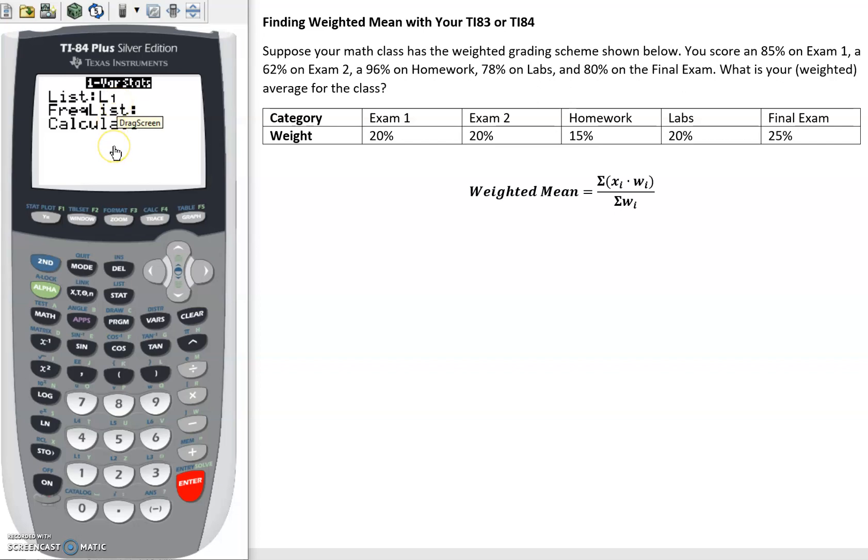And now we do have a frequency list. These are going to be the different weights. So let's try list 2. So we hit 2nd and then 2. And we see above that's the little list 2. So list 2 is our frequency list. Let's calculate.